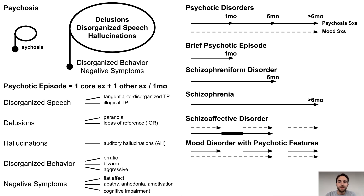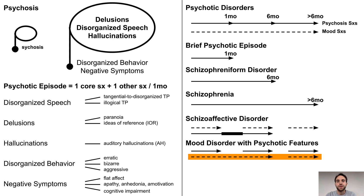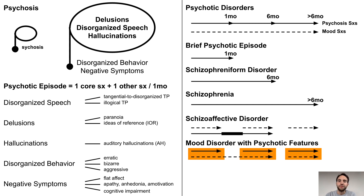Schizoaffective disorder needs to be differentiated from a mood disorder with psychotic features — for example, severe major depressive disorder with psychotic features, or bipolar disorder where manic episodes involve psychotic symptoms. In a mood disorder with psychotic features, the mood symptoms should be thought of as the underlying problem. There may be periods where only mood symptoms are present, but what differentiates a mood disorder with psychotic features is that psychotic symptoms are only present in the context of mood episodes, not on their own.